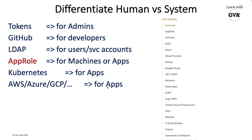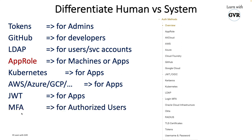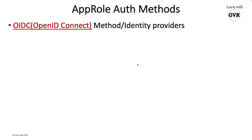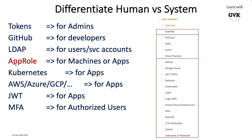Apps on AWS, Azure, and GCP also use AppRole. Apps means any services. JWT (Java Web Token) is used by applications or REST APIs. Multi-factor authentication is 100% for users because someone has to manually authorize. AppRole provides a mechanism specifically to authenticate machines or apps to the vault system.